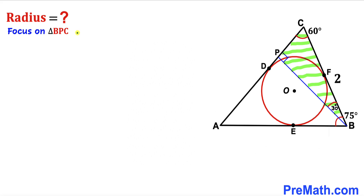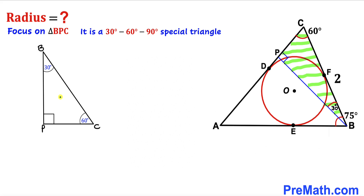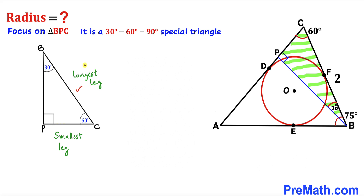Let's focus on this right triangle BPC — it is a 30-60-90 special triangle. The smallest leg is opposite the 30-degree angle and the longest leg is opposite the 90-degree angle. In such a 30-60-90 triangle, the longest leg is always twice the smallest leg: if the smallest leg is 1 unit, the longest is 2. In our triangle, the largest side is 2 units.